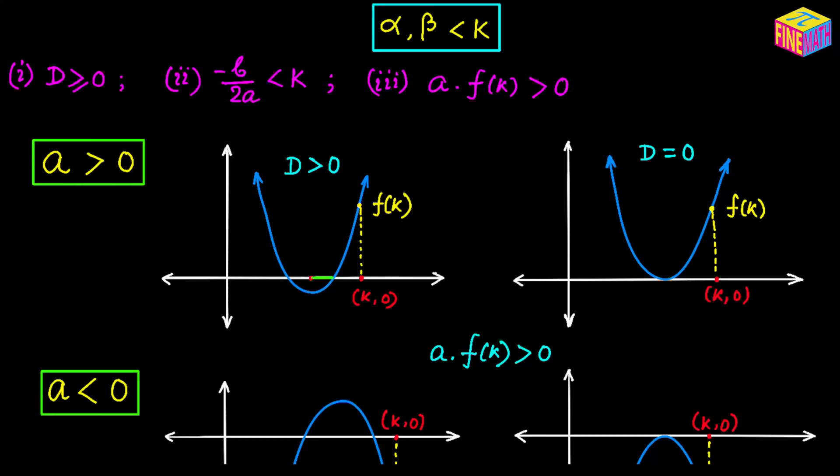To guarantee that both roots of the quadratic equation are less than k, all three conditions must be satisfied simultaneously — these are AND conditions. After solving each inequality to get its solution set, we must take the intersection of the three solution sets, not the union, because all three conditions must hold.